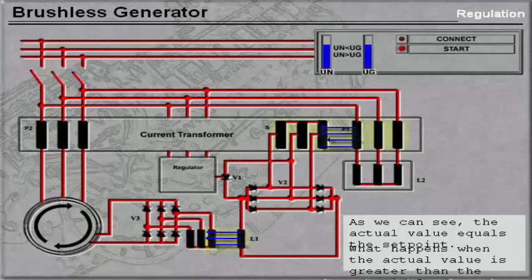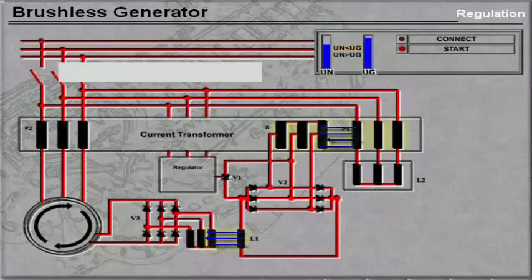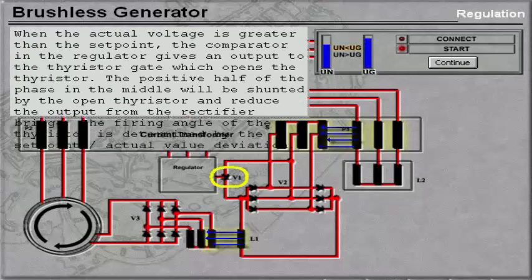What happens when the actual value is greater than the set point? When the actual voltage is greater than the set point, the comparator in the regulator gives an output to the thyristor gate which opens the thyristor. The positive half of the phase in the middle will be shunted by the open thyristor and reduce the output from the rectifier bridge. The firing angle of the thyristor is determined by the set point actual value deviation.